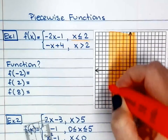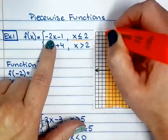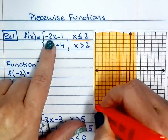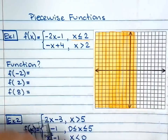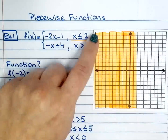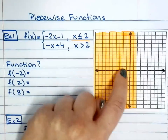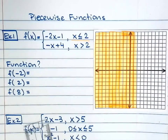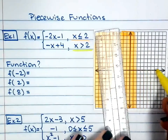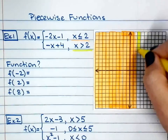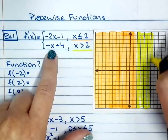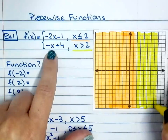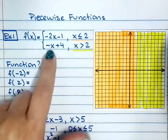I'm not graphing yet, I'm just setting up my graph to make sure that on this part of the graph I will have this function. I know that it's a linear function because negative 2x has a negative slope and the y-intercept is at negative 1. On this part of the graph where x is greater than 2, I will use this function: negative x plus 4.